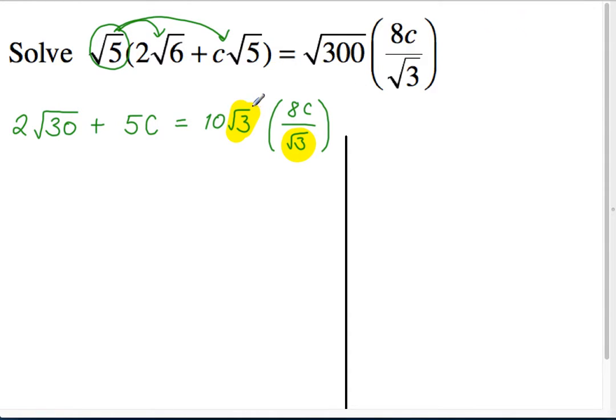Anything you divide by itself ends up being 1. Good. So we can cancel those out, leaving a much easier equation.